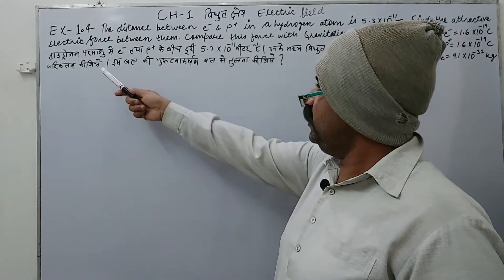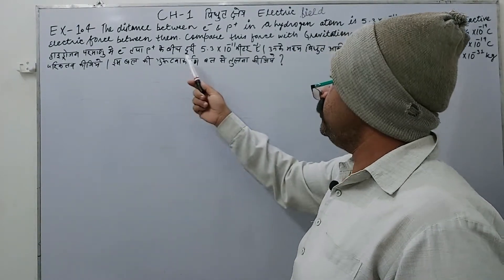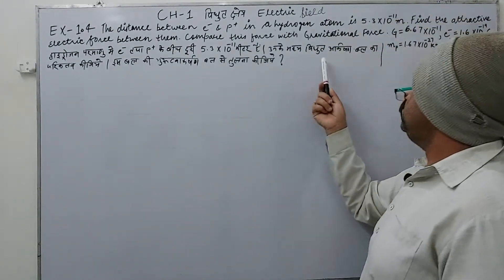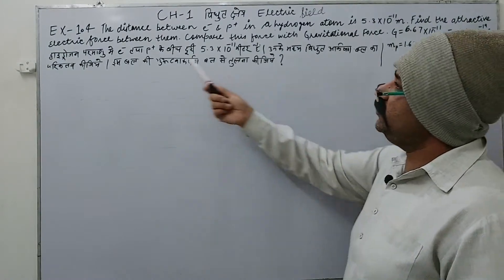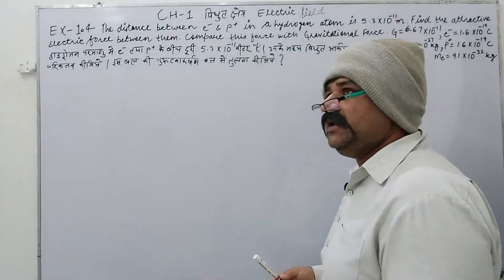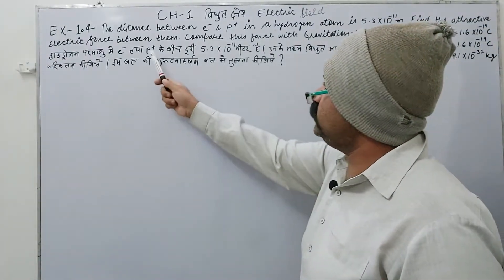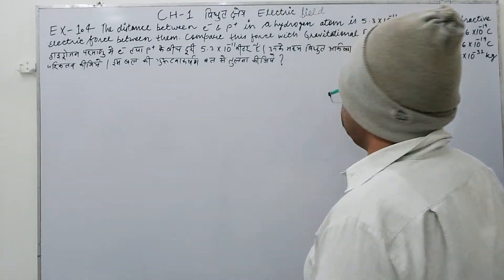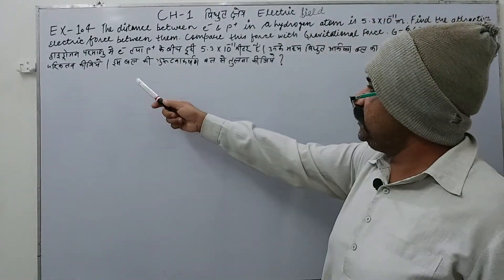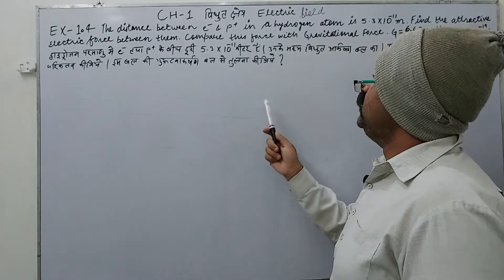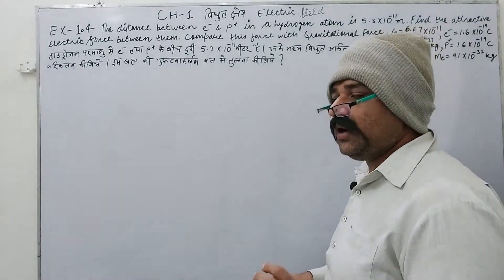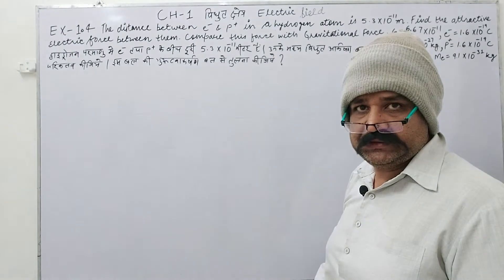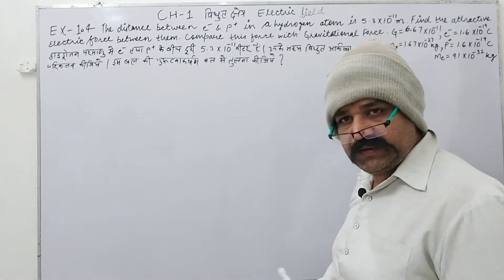In Hindi: the distance between electron and proton in a hydrogen atom is given. We need to find the electrostatic attractive force — attractive because between proton and electron there is attraction. If both were protons, there would be repulsion; if both were electrons, repulsion. Calculate this force and compare it with the gravitational attractive force.